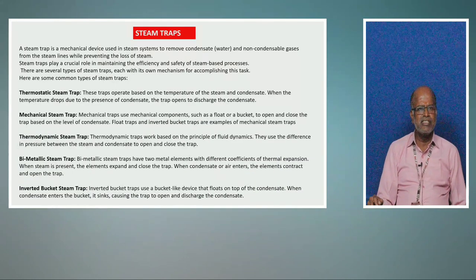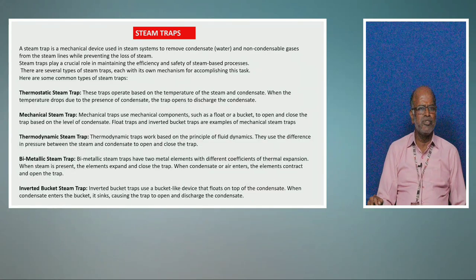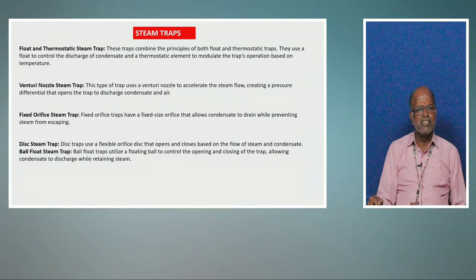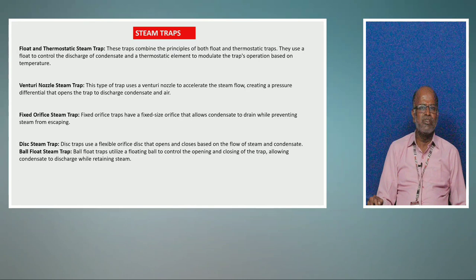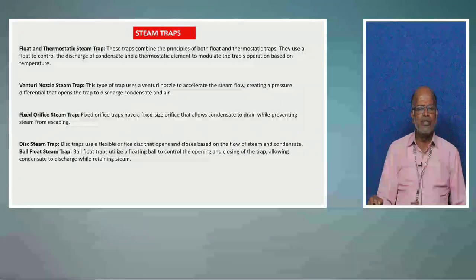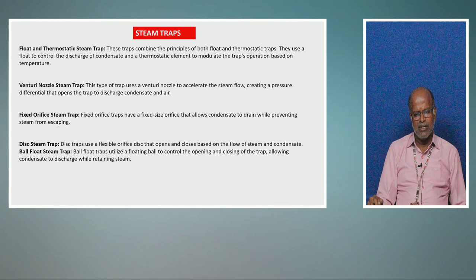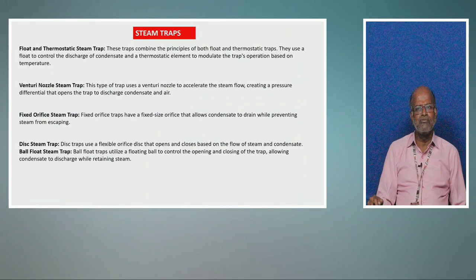Next is the steam trap. A steam trap is a mechanical device used in steam systems to remove condensate and non-condensable gases. There are various types: thermostatic steam trap, mechanical steam trap, thermodynamic steam trap, bimetallic steam trap, inverted bucket steam trap, venturi, fixed orifice, disc trap, and ball float steam trap. Steam traps are mostly used to remove condensate from pipelines wherever steam is used, such as for sterilization in the fermentation industry. As the pipeline travels a distance, condensation of steam can occur and must be removed at regular intervals — if not, it leads to water hammering of the pipeline, which is dangerous.